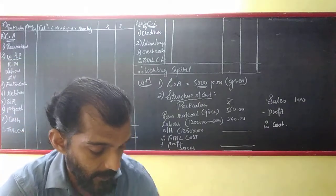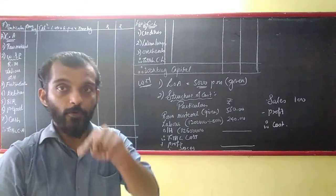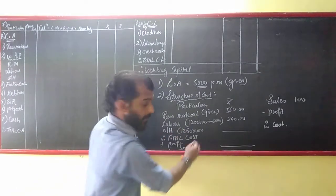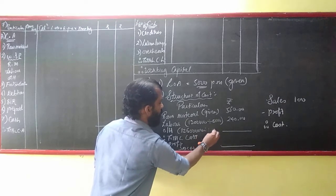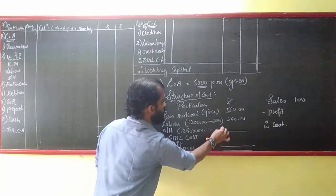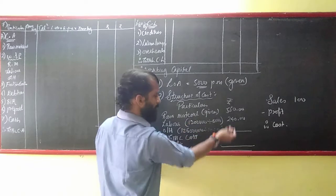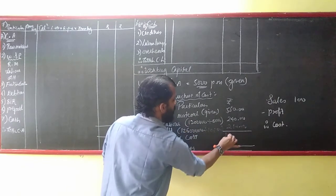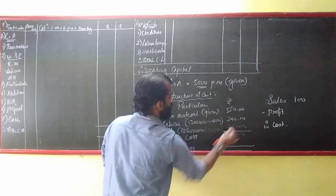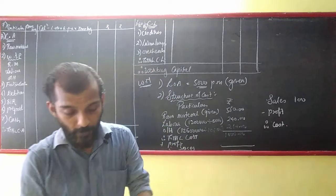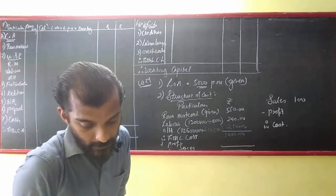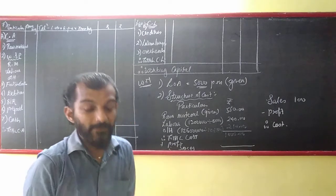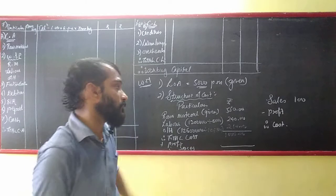So my total cost per unit is ₹1,000. The sales price is fixed by the company at a profit of 20% on selling price. We assume sales equals ₹100. Profit is ₹20, so cost is ₹80. That ₹1,000 divided by 80% gives ₹1,250 as the selling price.